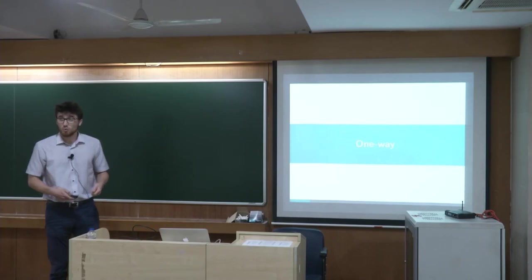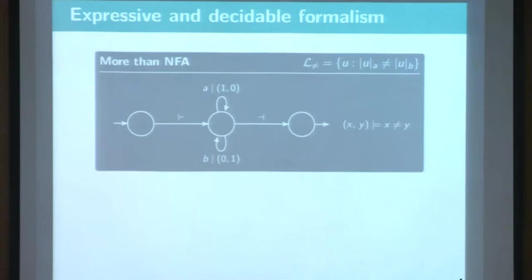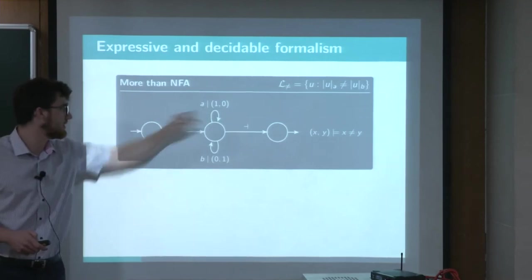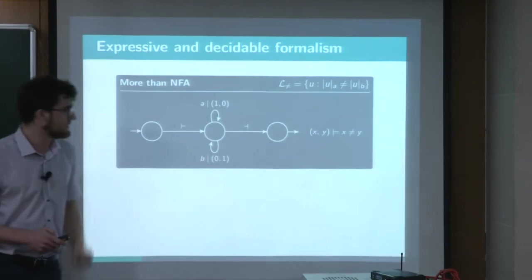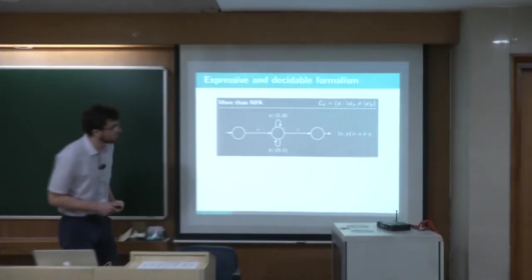So let me start with the one way. So it pops up from the literature two main properties. The first one is the fact that Parikh Automaton extends strictly the class of NFA. And as you can see here, there is an automaton which counts the number of A of the input word in the first dimension and counts the number of B in the second one.